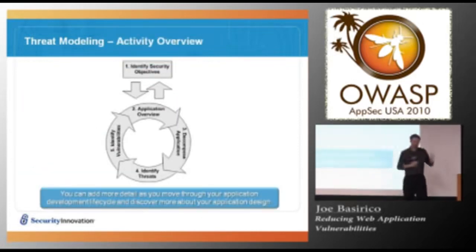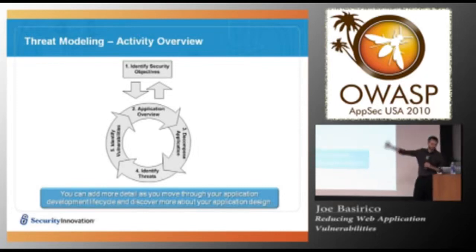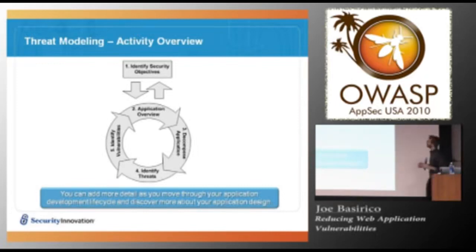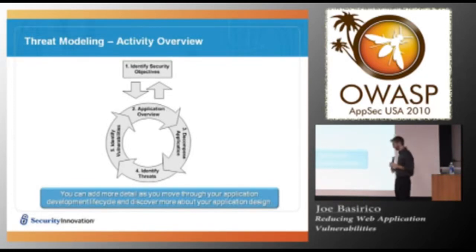To accomplish this whole threat modeling task, we generally follow an activity cycle. The first phase is to identify our security objectives — and this is a general security framework for the process.